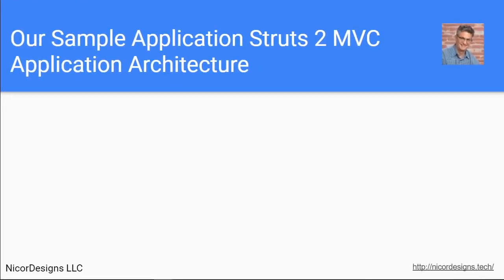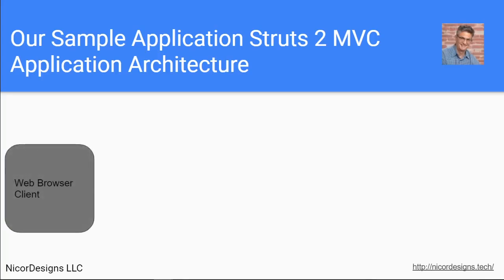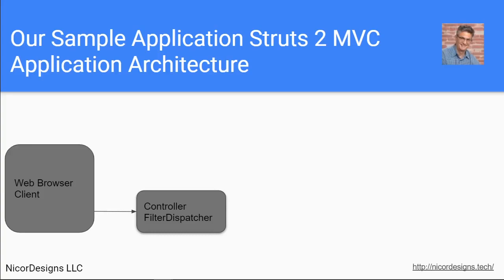A quick revisit of Struts 2 architecture and a look at the location of the major changes. Starting with the web clients, we have a call to the Struts 2 controller servlet — a filter controller servlet which is a Java singleton servlet. This servlet makes use of the struts.xml config file where you define the workflow of your web app, or you can use Java annotations. We will use XML because it is a better and more verbose teaching tool and it separates configuration from code.